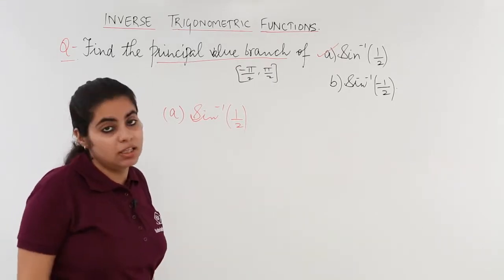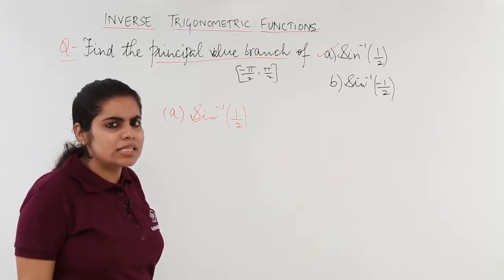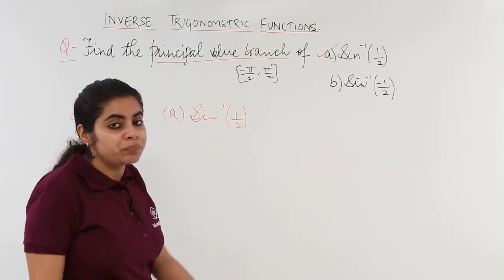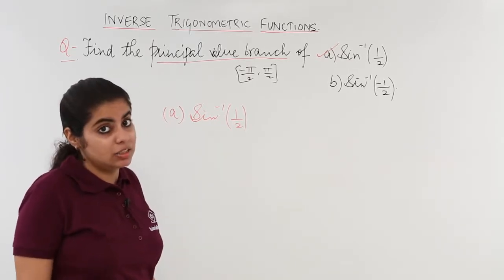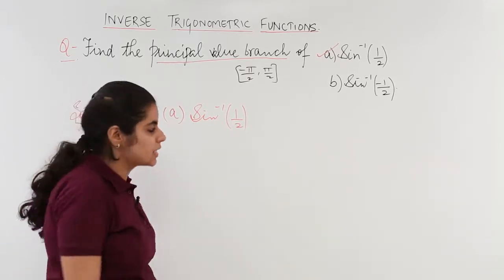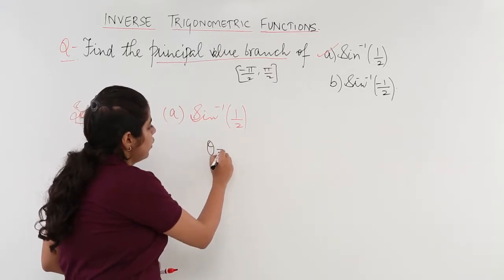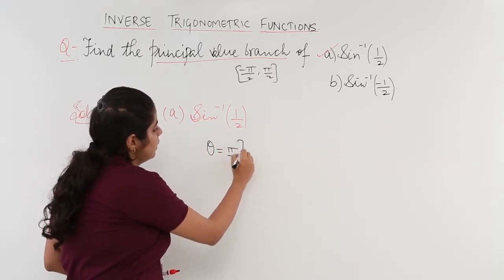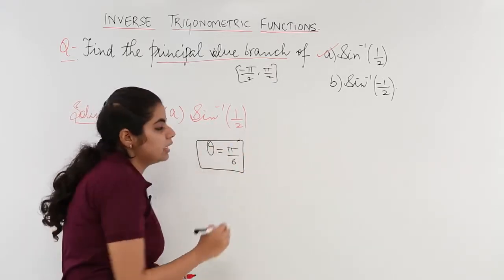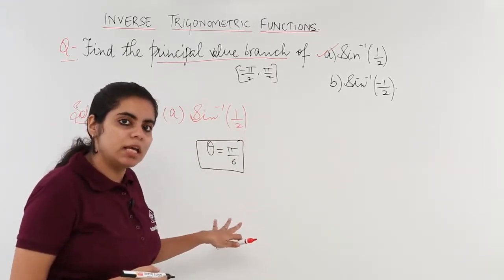What angle of sine gives me 1 by 2? I know that sine 30 degrees is 1 by 2. What is sine 30 degrees? Sine 30 degrees is pi by 6.